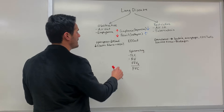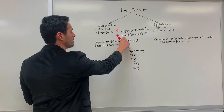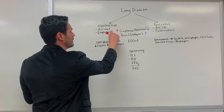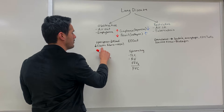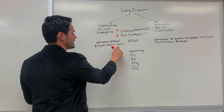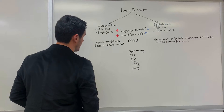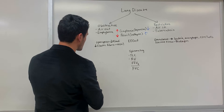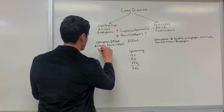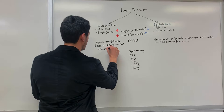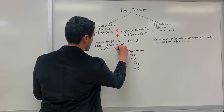Why do you see a decrease in recoil for emphysema? This is because we have a reduced amount of elastic fibers. Also, during expiration, some of those bronchioles constrict.